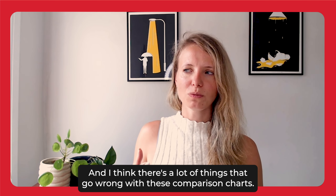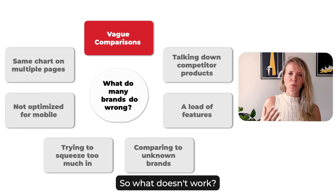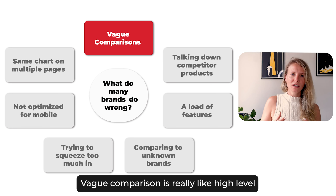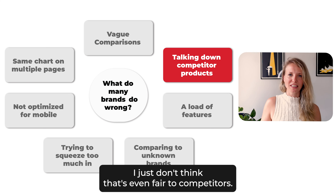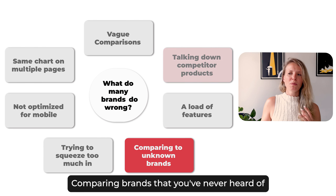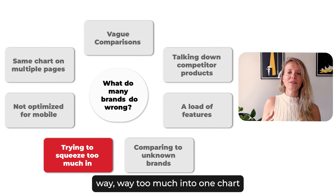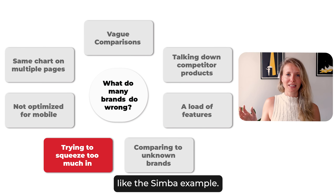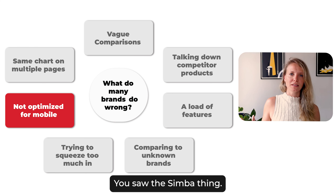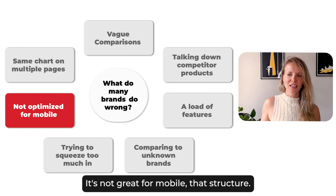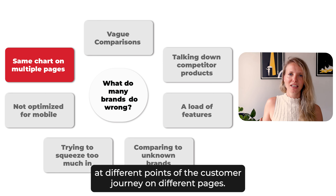That's the thing — there's a lot of things that go wrong with these comparison charts. And as a result, sometimes I think they actually hurt conversion rather than helping it. So what doesn't work? Big, high-level comparisons on features. Everything being marked as great versus competitors being bad — I just don't think that's even fair to your competitors, and we'll get more into that later. Comparing brands the customer has never heard of or isn't thinking about, or trying to squeeze way too much into one chart. Also, these are often not mobile-first — I know I shouldn't have to preach that, but they're not. And the final thing is that the same comparison chart is used at different points of the customer journey on different pages.